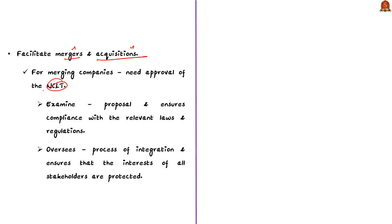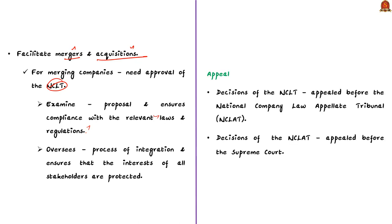Secondly, NCLT deals with cases pending under the Sick Industries Companies Special Provisions Act 1985, enacted to detect unviable or sick companies with potential systemic financial risk. Finally, NCLT plays a crucial role in facilitating mergers and acquisitions. When two or more companies wish to merge, they must seek approval from NCLT. The tribunal examines the proposal, ensures compliance with relevant laws, oversees the integration process, and ensures that the interests of all stakeholders are protected.